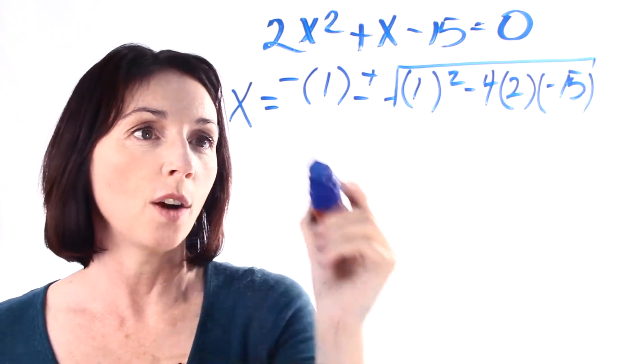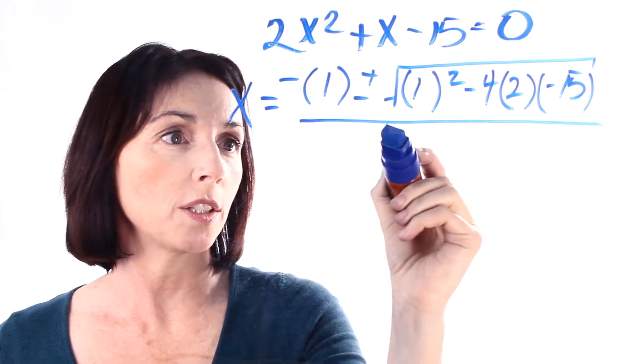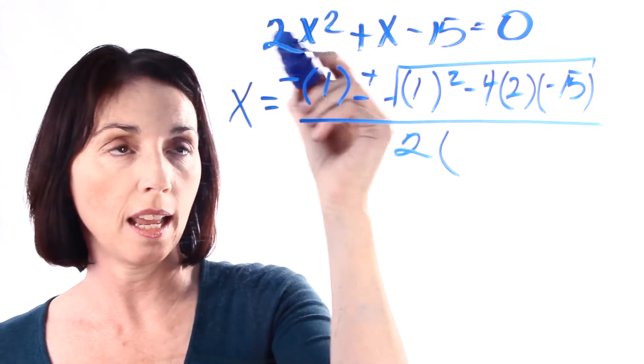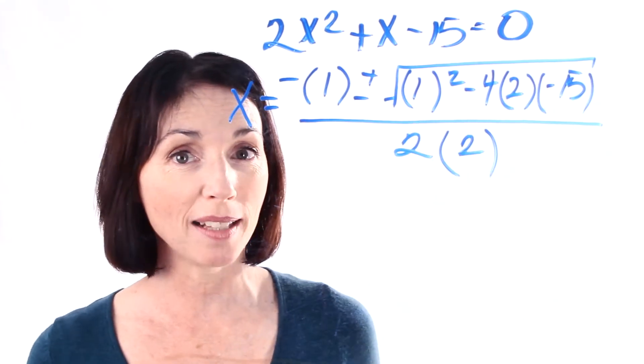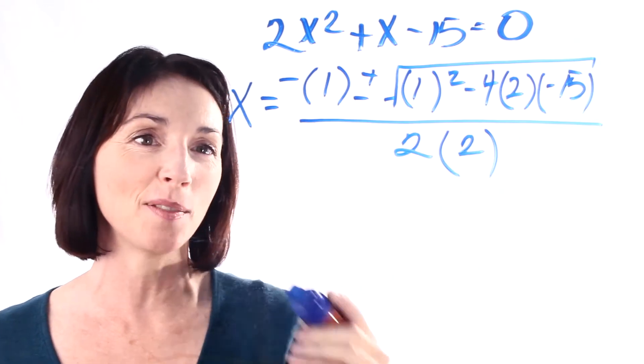That one right there. Okay, and all of that is divided by 2 times a, which again a is equal to 2. Okay, now it looks like a big mess, but we'll just keep calculating and see where we get.